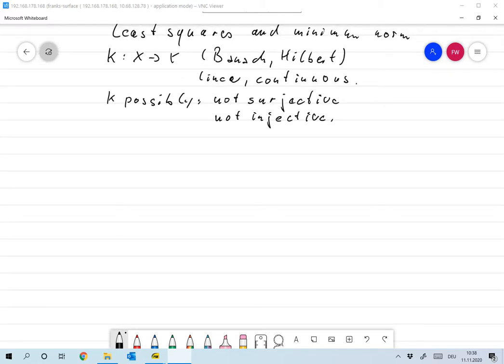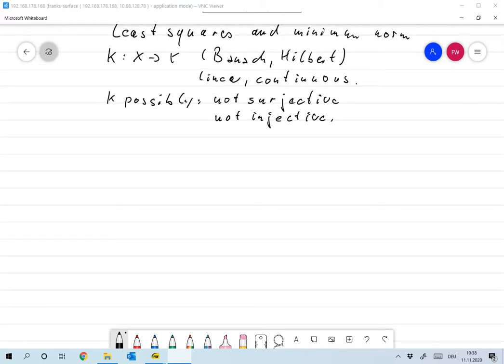So now let's look at it in the following form. We wish to solve the problem Ku = f for an f in Y and u in X.